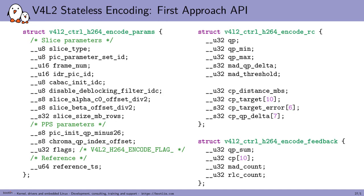This is what the userspace API looks like. We have the encode parameters that take various fields for NALUs — the slice parameters, the PPS parameters, and a timestamp for reference. On the right side we can see rate control encode parameters with QP and different thresholds, deltas, etc. We also have the encode feedback, which is what we get from the registers of the H1 encoder.